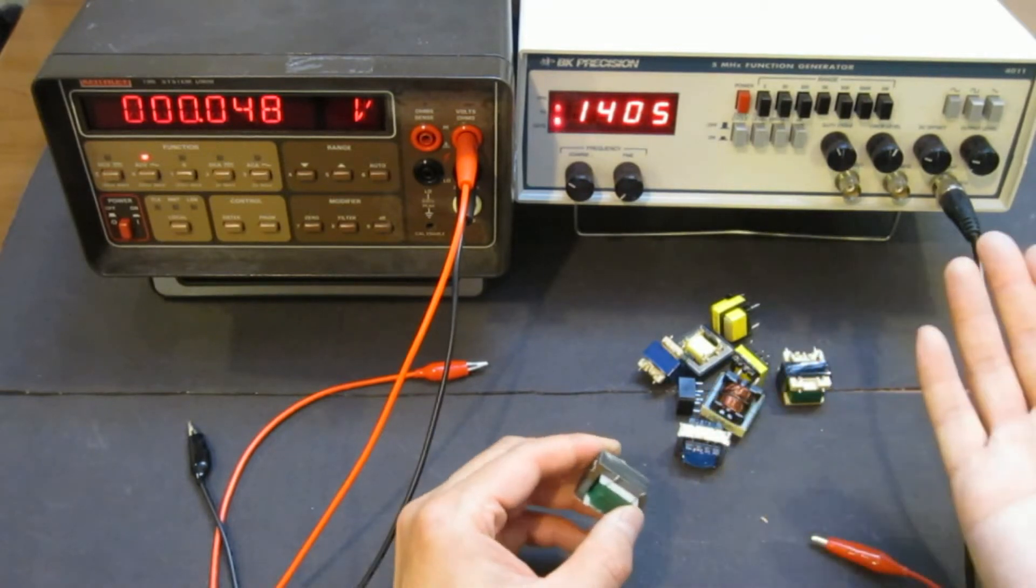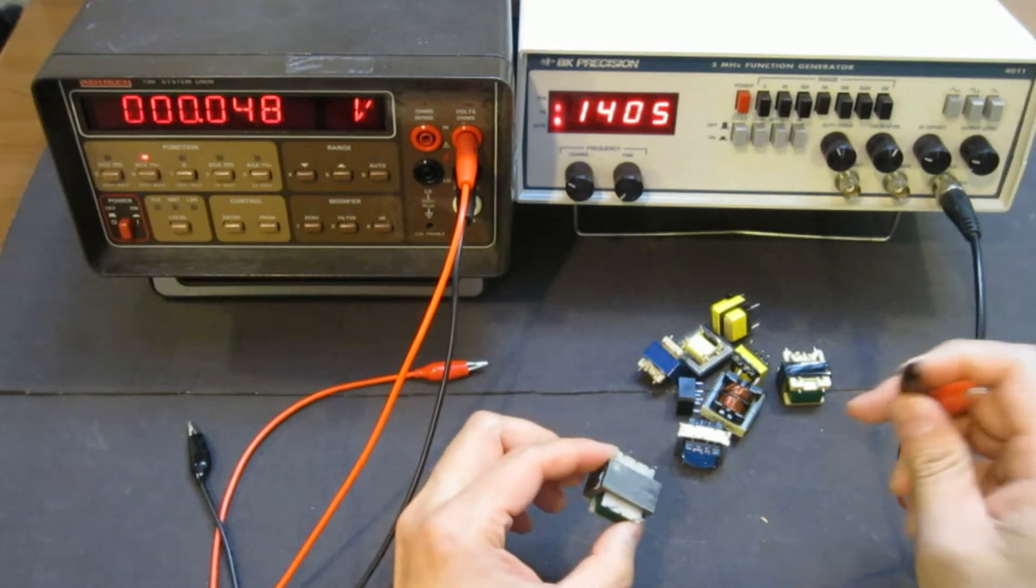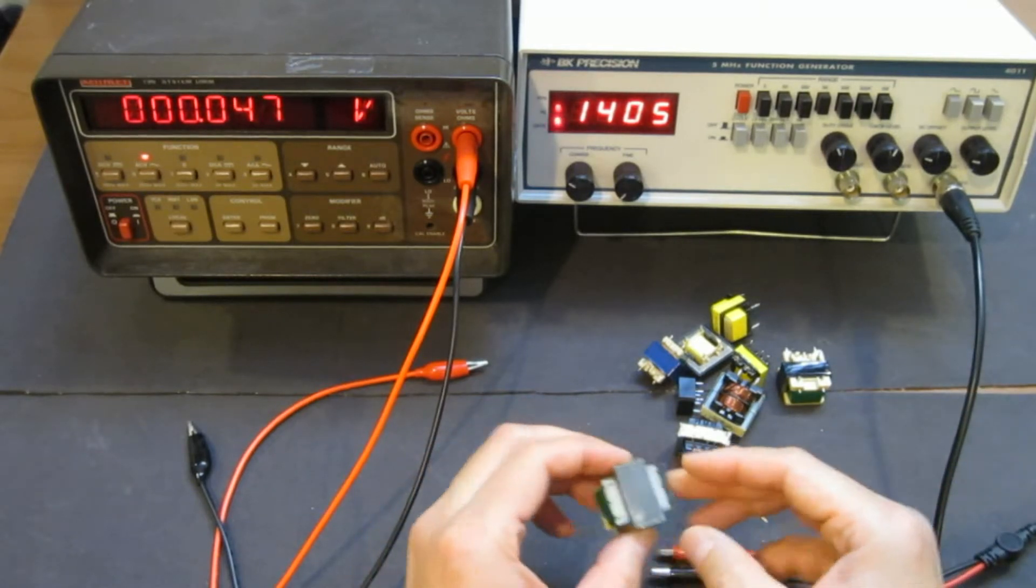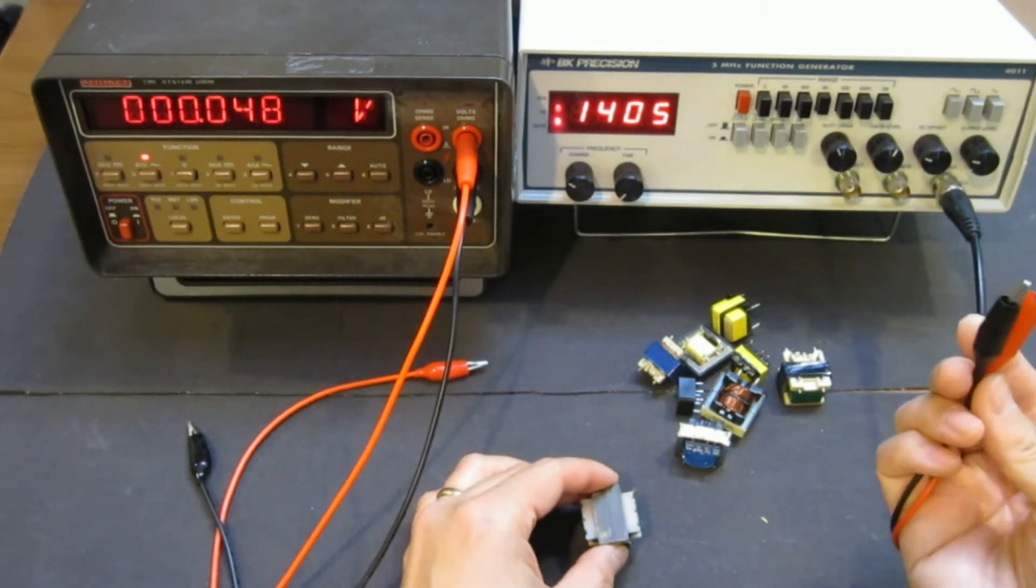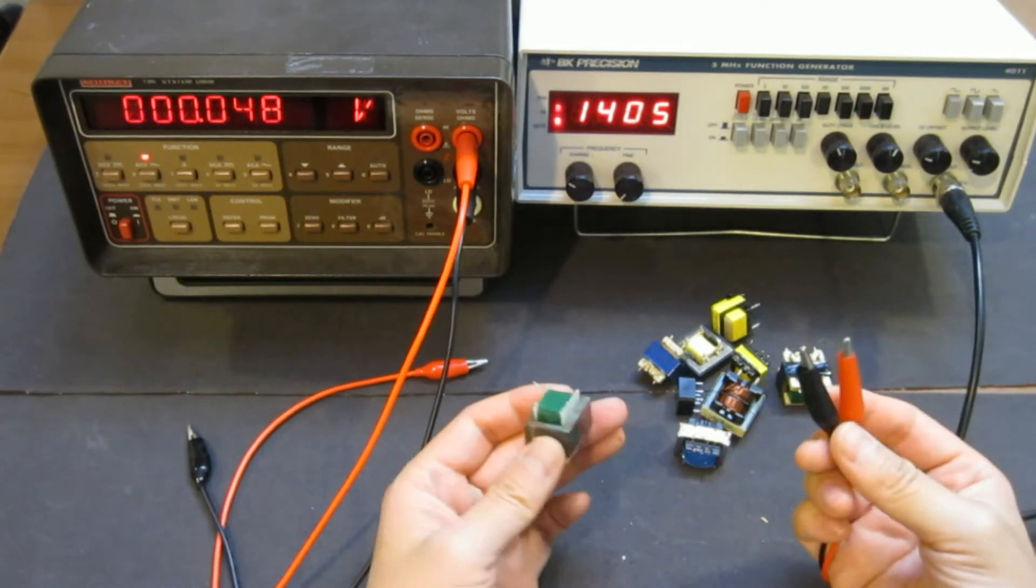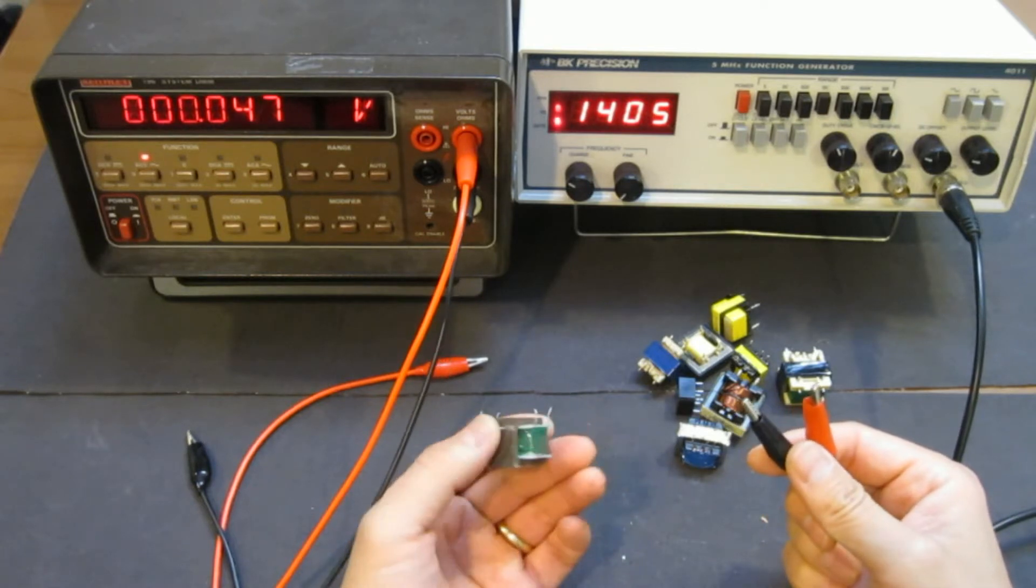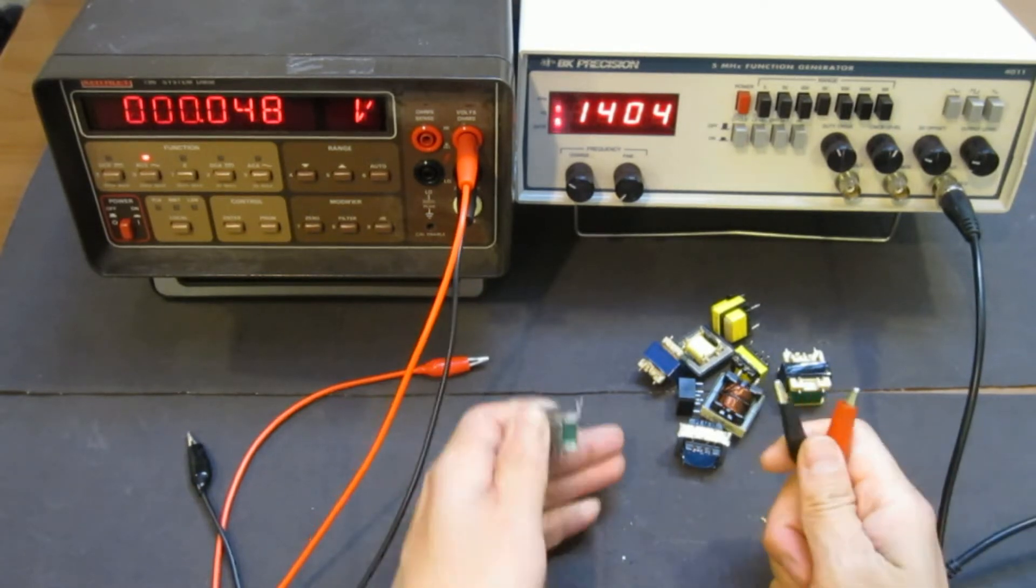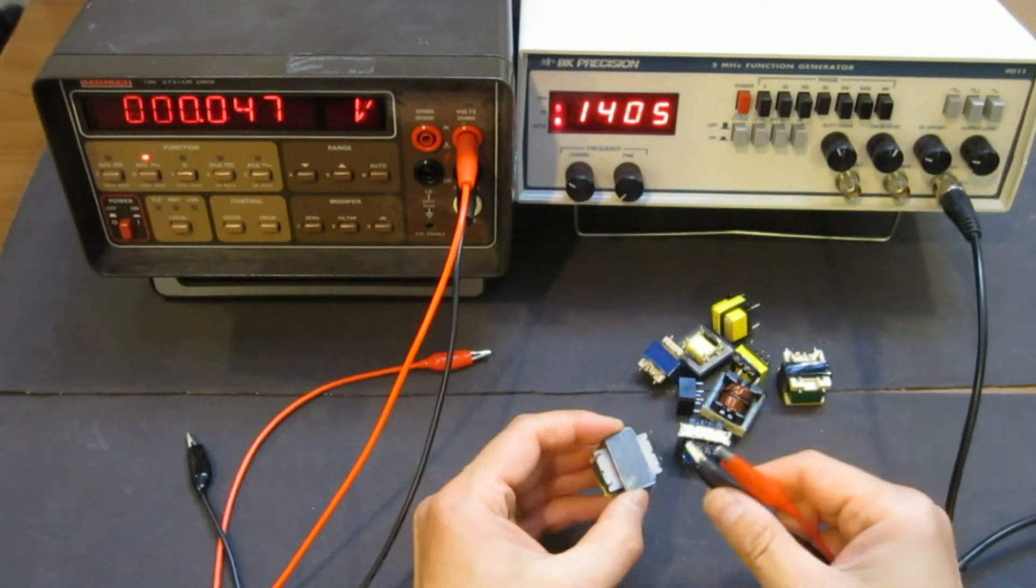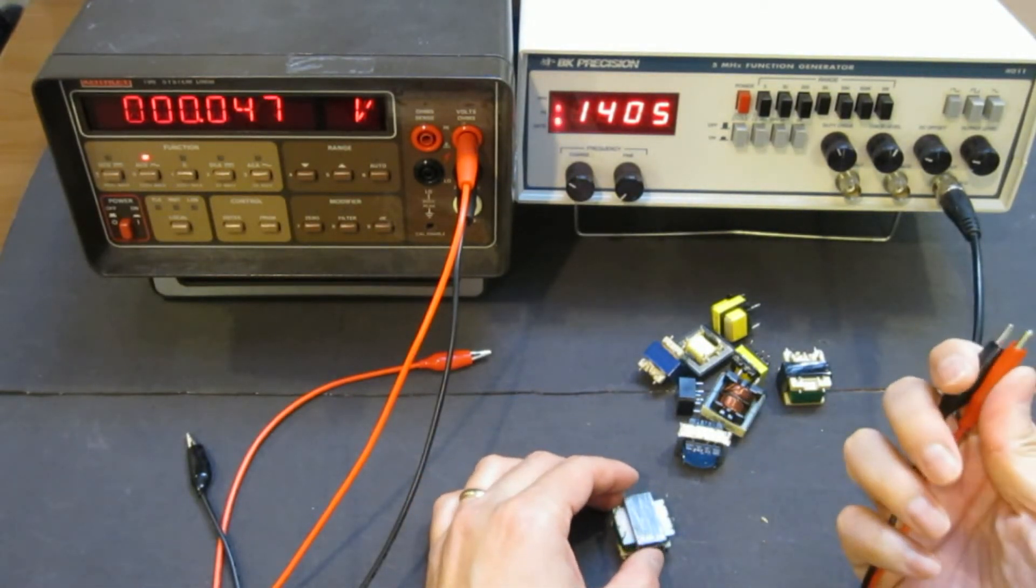Anyway, so right now we'll set it to the sine wave. And let's try to take a look at this transformer. By the way, the output of the function generator is usually terminated at 50 ohm. So it depends on the inductance on your transformer you're testing and the operating frequency. You may be shorting the output of the function generator.